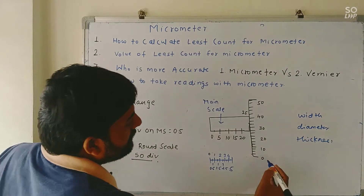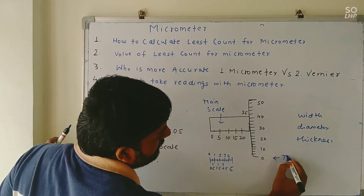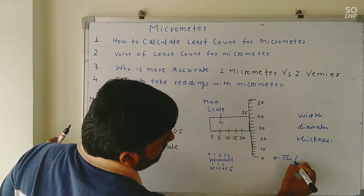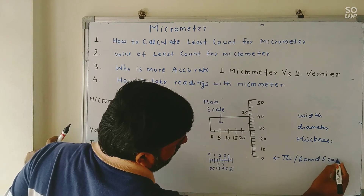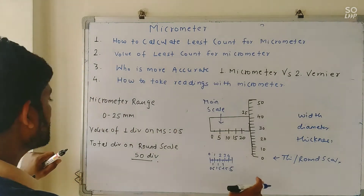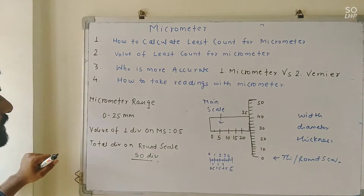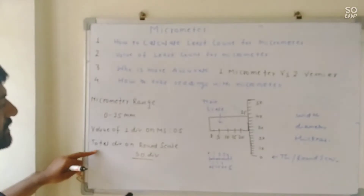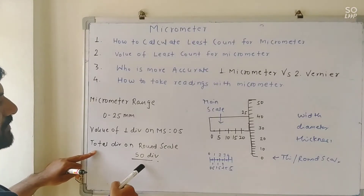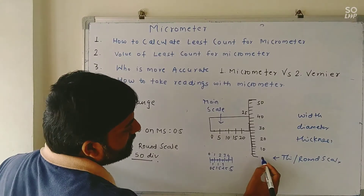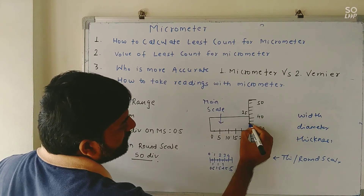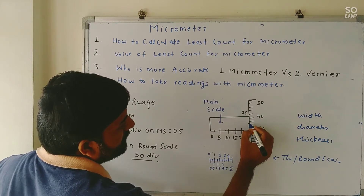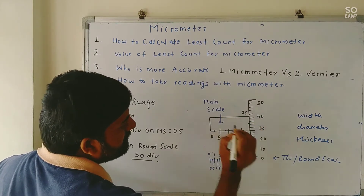This scale is called the thimble scale or round scale. On the thimble scale you can see there are 50 division marks from 0 to 50 — that is 0, 10, 20, 30, 40, 50. This point we have to take into consideration along with the main scale while taking a reading.